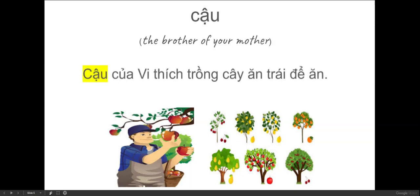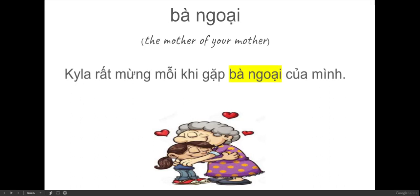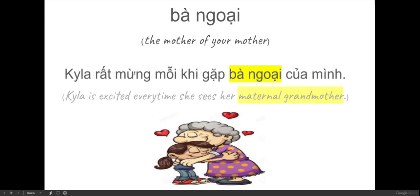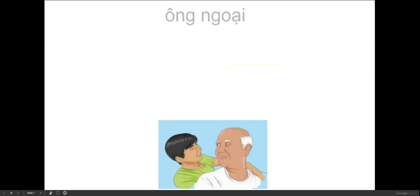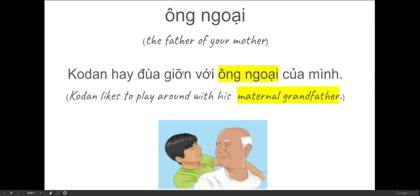For example, cậu của Vy thích trồng cây ăn trái để ăn — that means Vy's uncle likes to plant fruit trees to eat. Bà ngoại is the mother of your mother, which is your grandmother on your mother's side. For example, Kyla rất mừng mỗi khi gặp bà ngoại của mình — that means Kyla is excited every time she sees her maternal grandmother. Ông ngoại means the father of your mother, which is your grandfather on the mother's side. For example, cậu Đình hay đùa giỡn với ông ngoại của mình — that means cậu Đình likes to play around with his maternal grandfather.